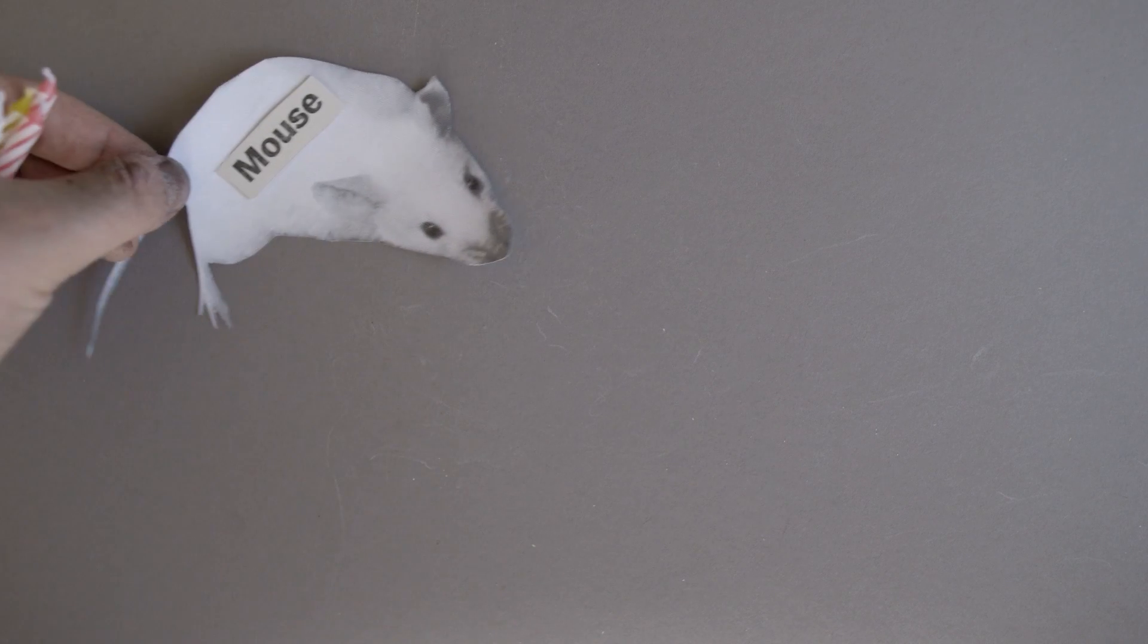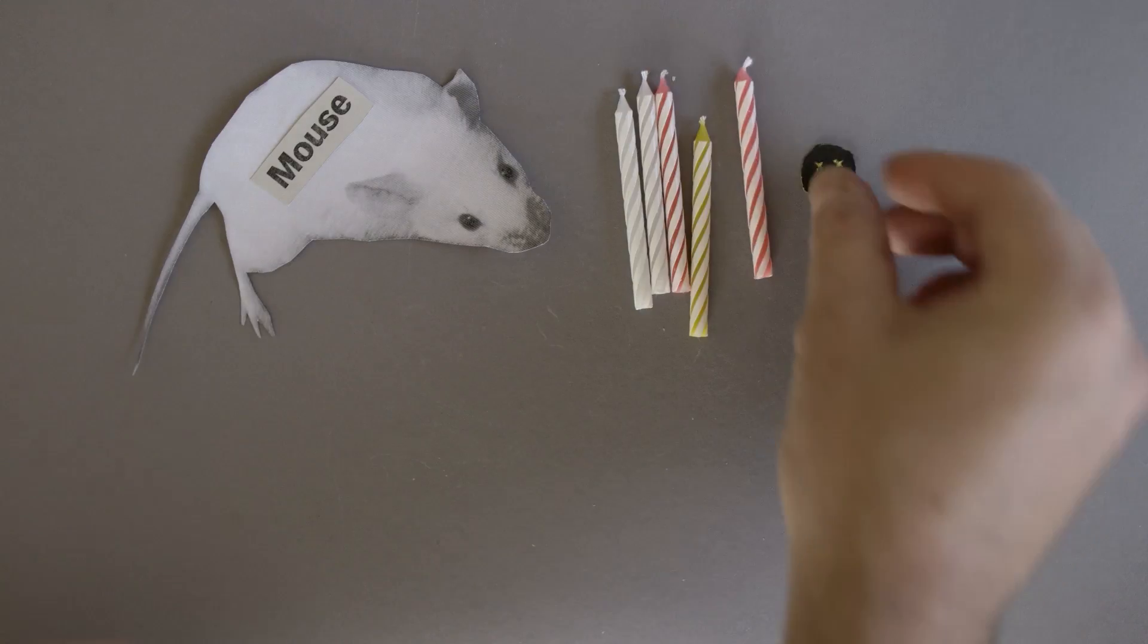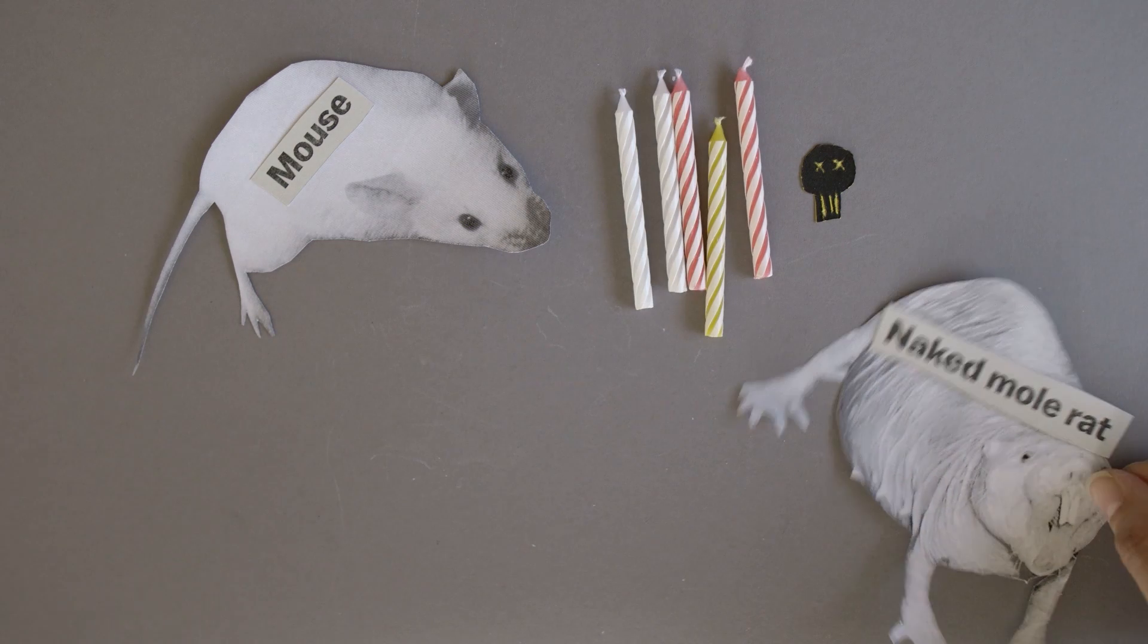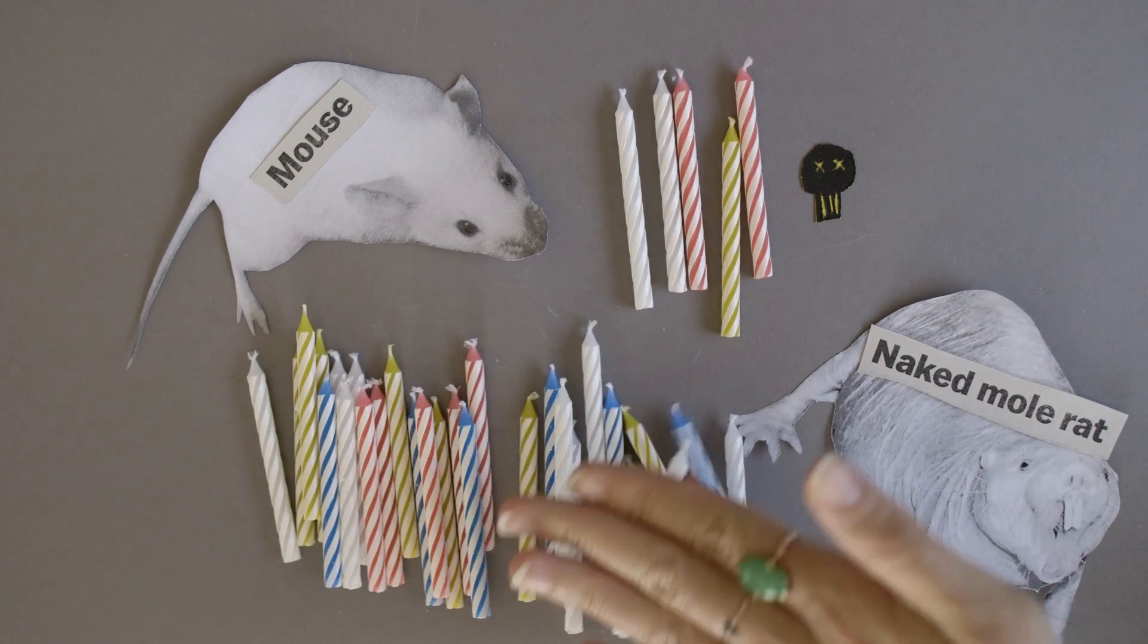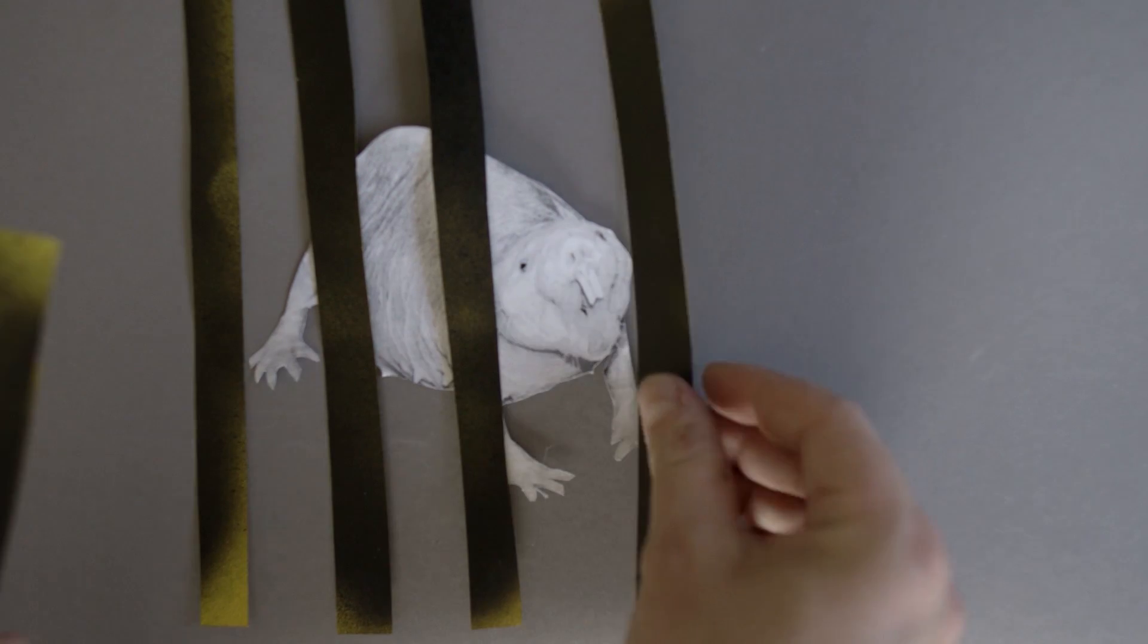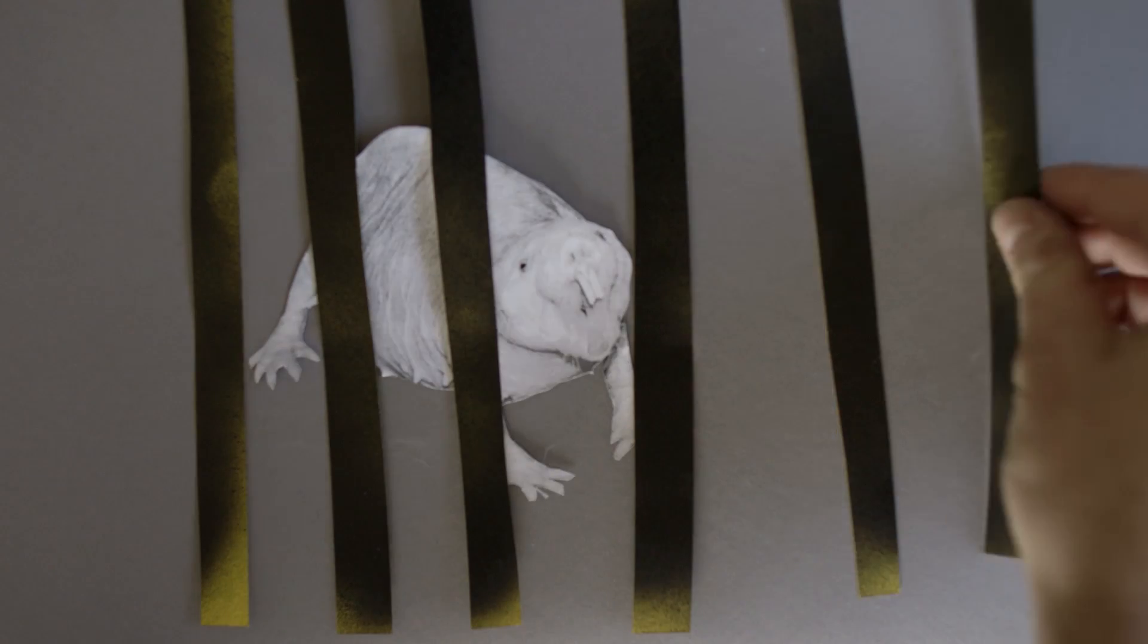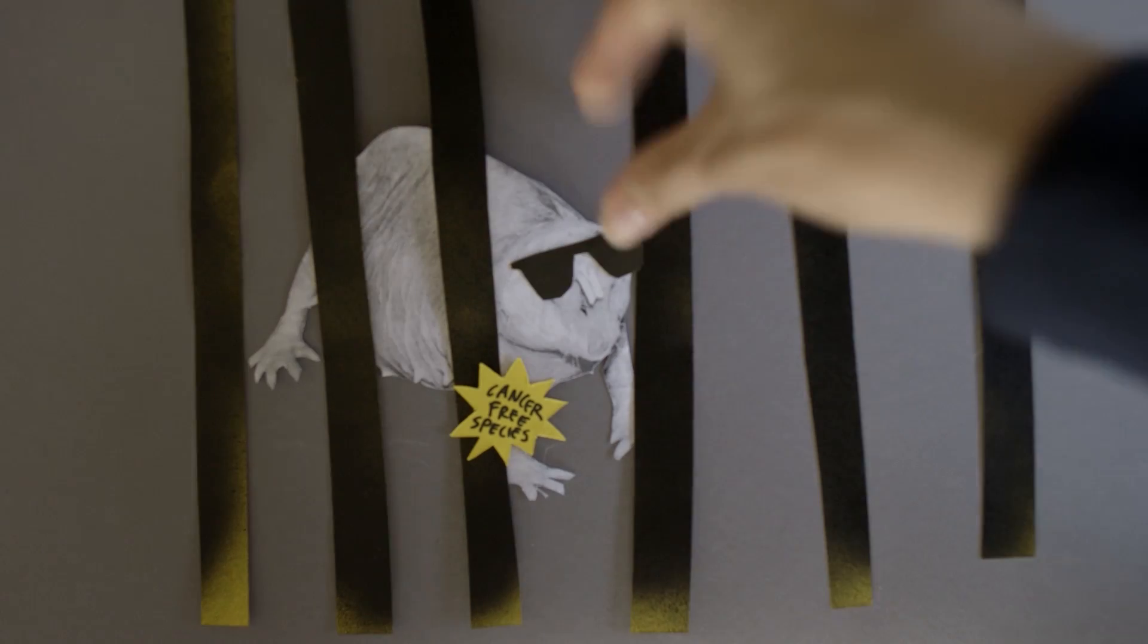Okay, so most rodents can live about five years. Small rodents. But naked mole rats, this exotic species from Africa, can live up to 30 years. One of the most amazing things is that in all the colonies of naked mole rats kept in labs around the world, scientists have never once observed them to develop cancer. That's not true for any other mammal species.